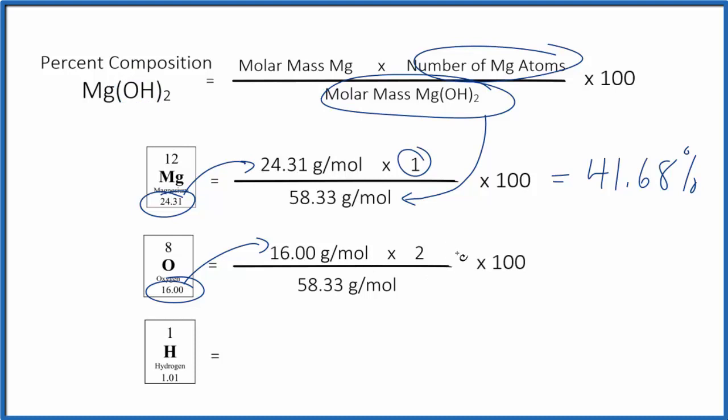We multiply, get that number, divide by the molar mass. You should note that grams per mole on the top and the bottom cancel out. Multiply all of that by 100, we get 54.86% composition by mass for oxygen in magnesium hydroxide.